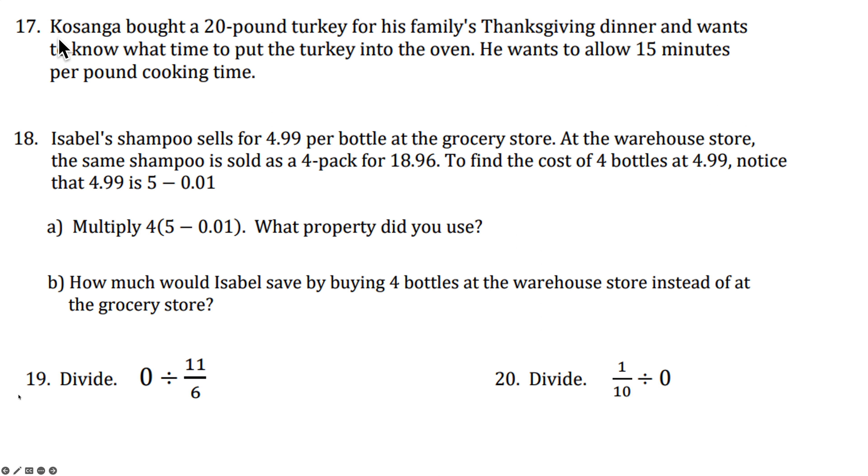All right 17. Let's see. Kasanga bought a 20 pound turkey for his family's Thanksgiving dinner and wants to know what time to put the turkey into the oven. He wants to allow 15 minutes per pound for cooking time. All right well we're going to have 20 pounds being multiplied by 15 or we can change 15 minutes and change it into a decimal hour of 0.25 or you could reduce this to 1 fourth of an hour. So 20 times 0.25 so again remember the 0 bumps the decimal point over 2 times 2.5 is 5 hours.